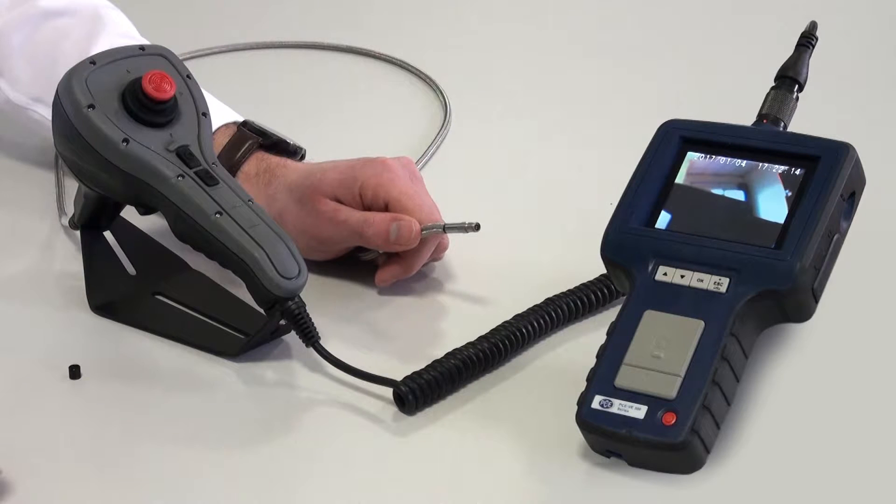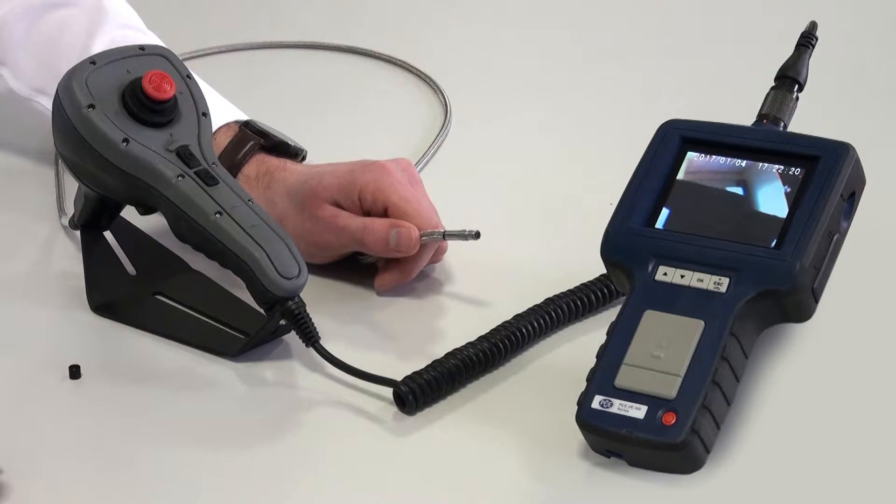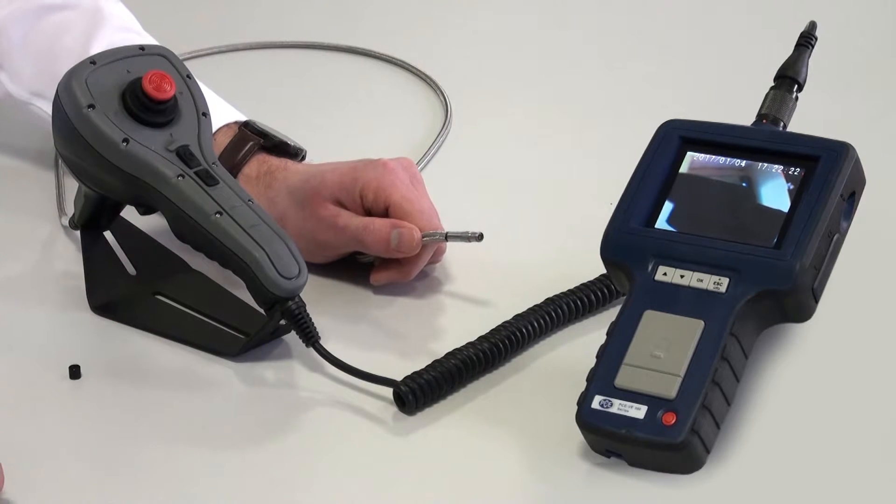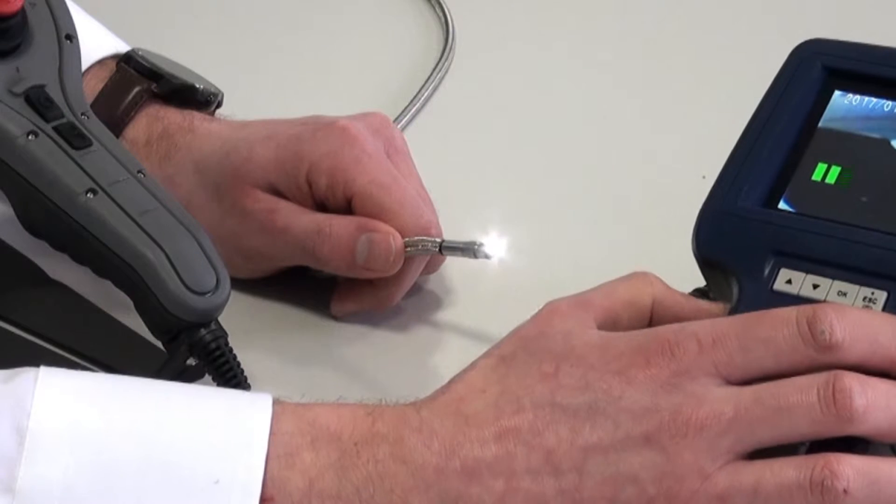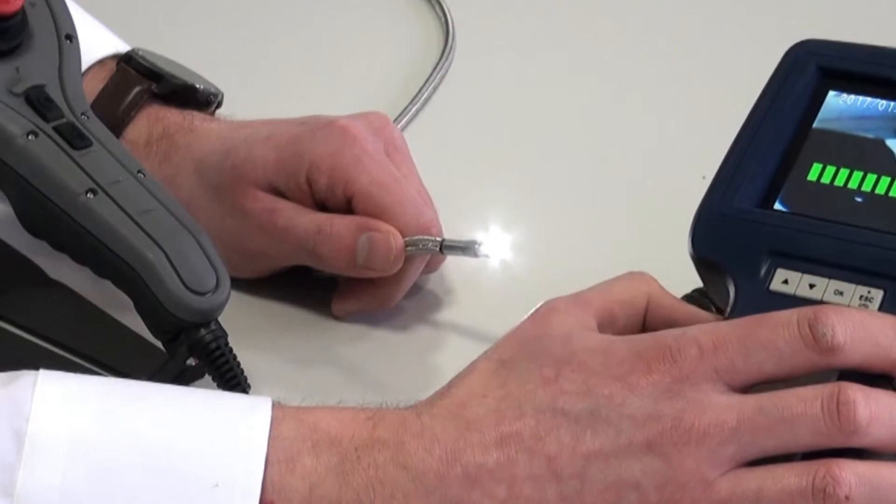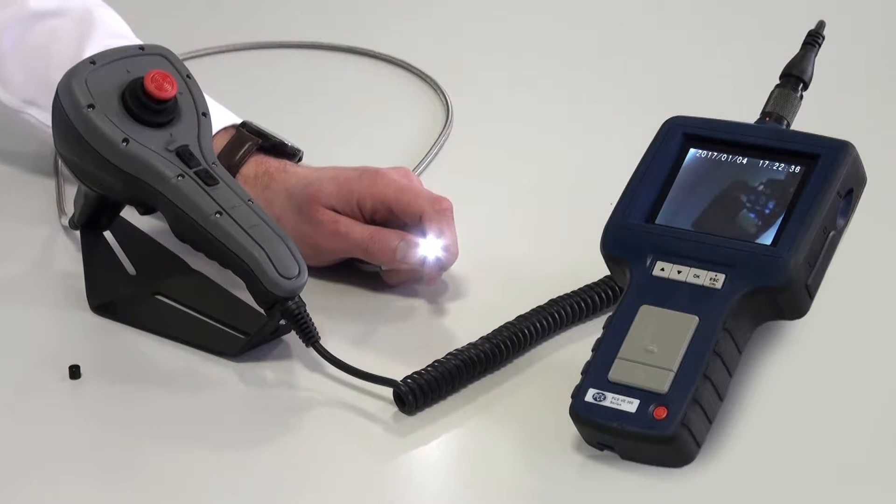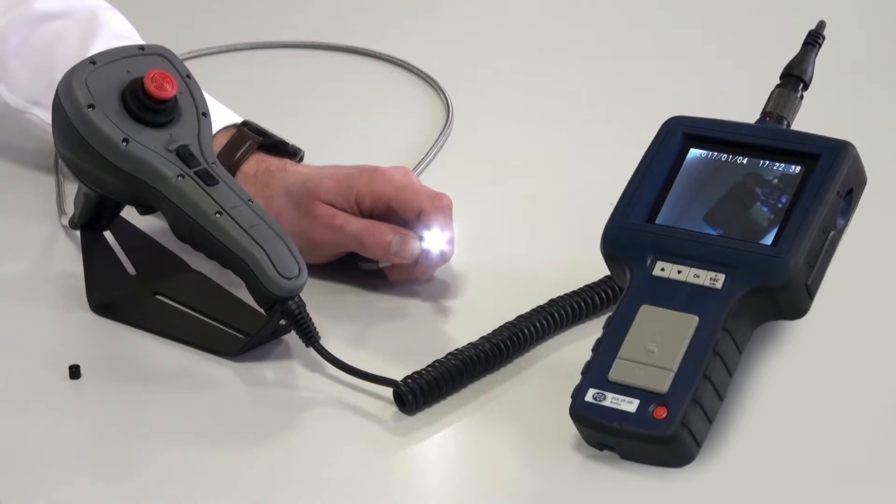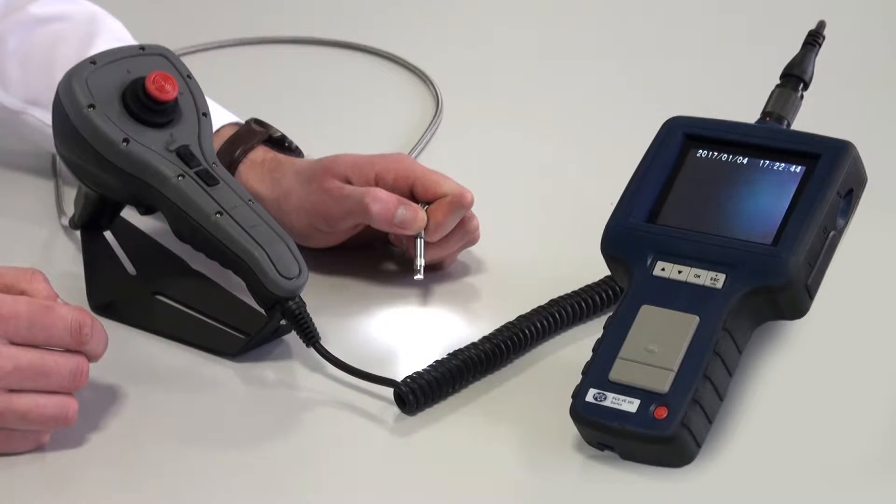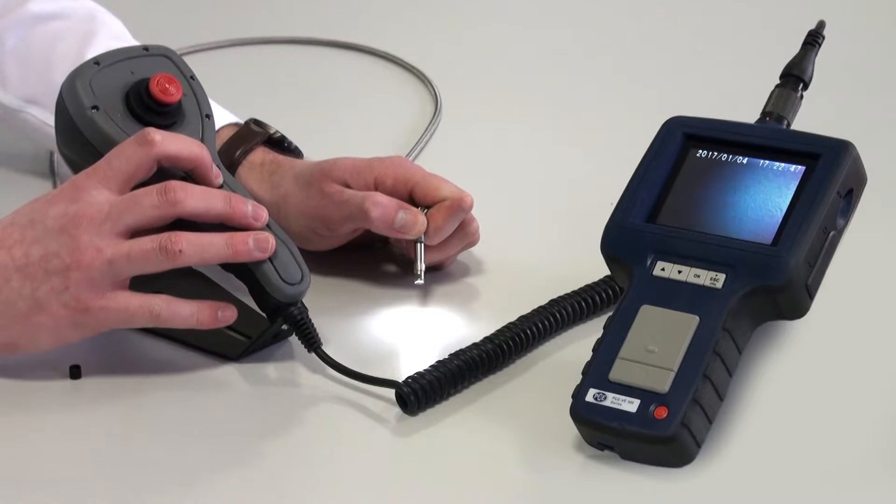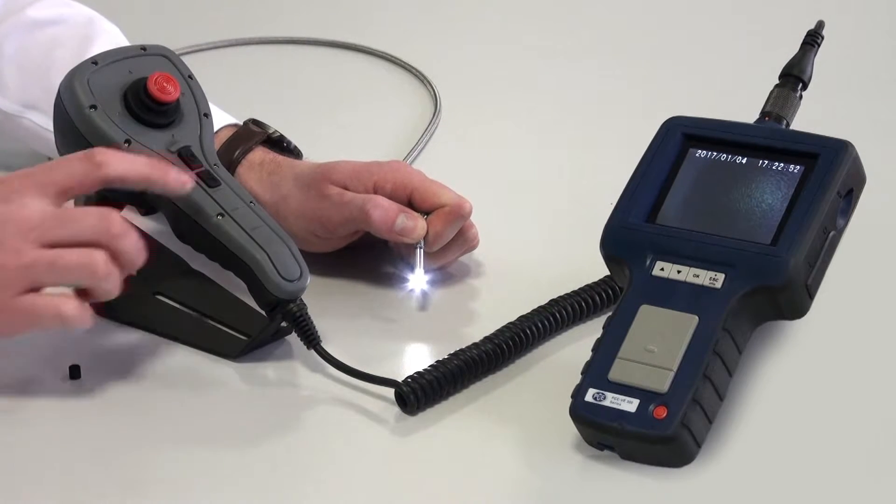On the head of the endoscope PCVE370HR are various LEDs to light up the position that is to be investigated. The LEDs can be dimmed on the handset and it is shown on the display what the dim step is. Now I have switched on the front light to directly light up a position. And on the joystick, on the hand grip, the side light can be easily switched over. As you can see here, the side lighting, when I switch it again, the front light lights up.